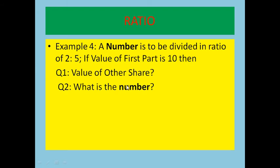Now we find the value of the other part. Since ratio 5 is the other part, and the value of ratio 1 is 5, the value of ratio 5 equals 5 multiplied by 5, which is 25. This part is 10, this part is 25. So 10 plus 25 equals 35 — that is the total number. Or you can say: total of ratios is 7, and value of ratio 1 is 5, so the number is 35.